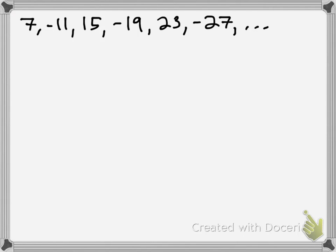So if you have a list of numbers, 7, negative 11, 15, negative 19, 23, negative 27, and so on, how can we find the nth term or a formula to generate this exact sequence?